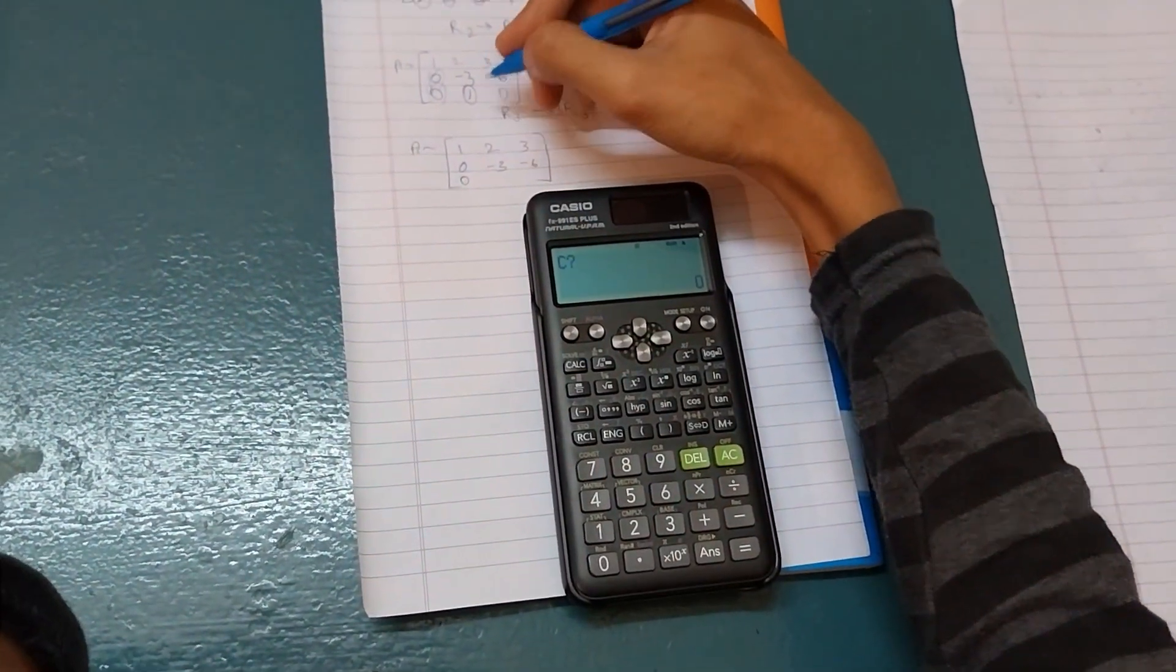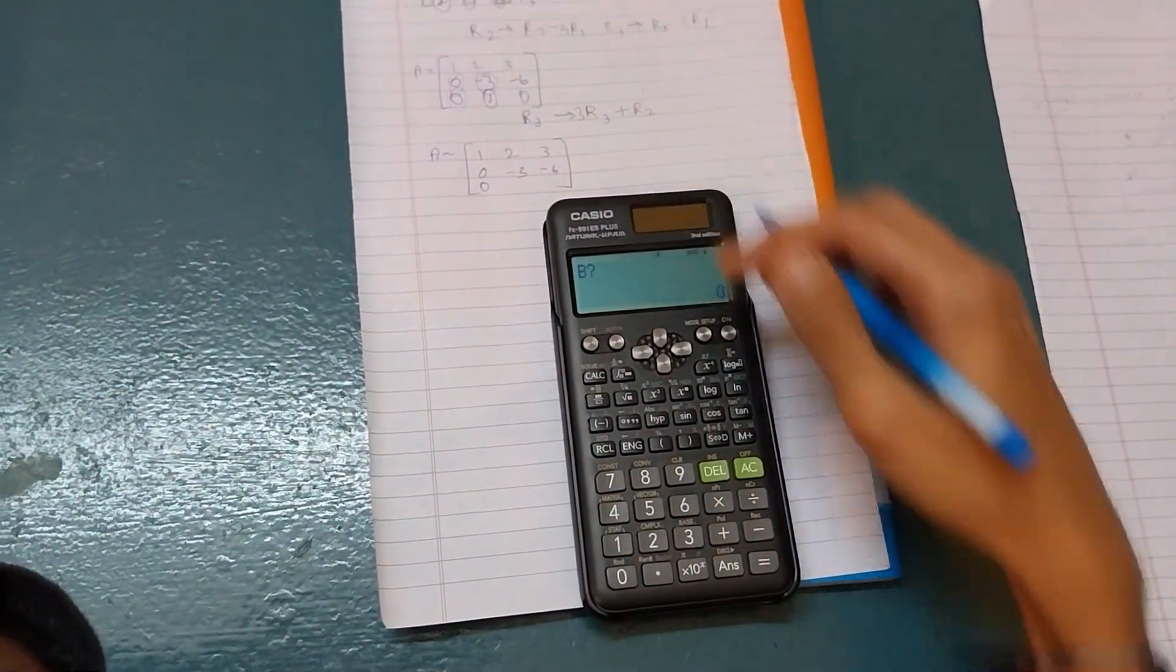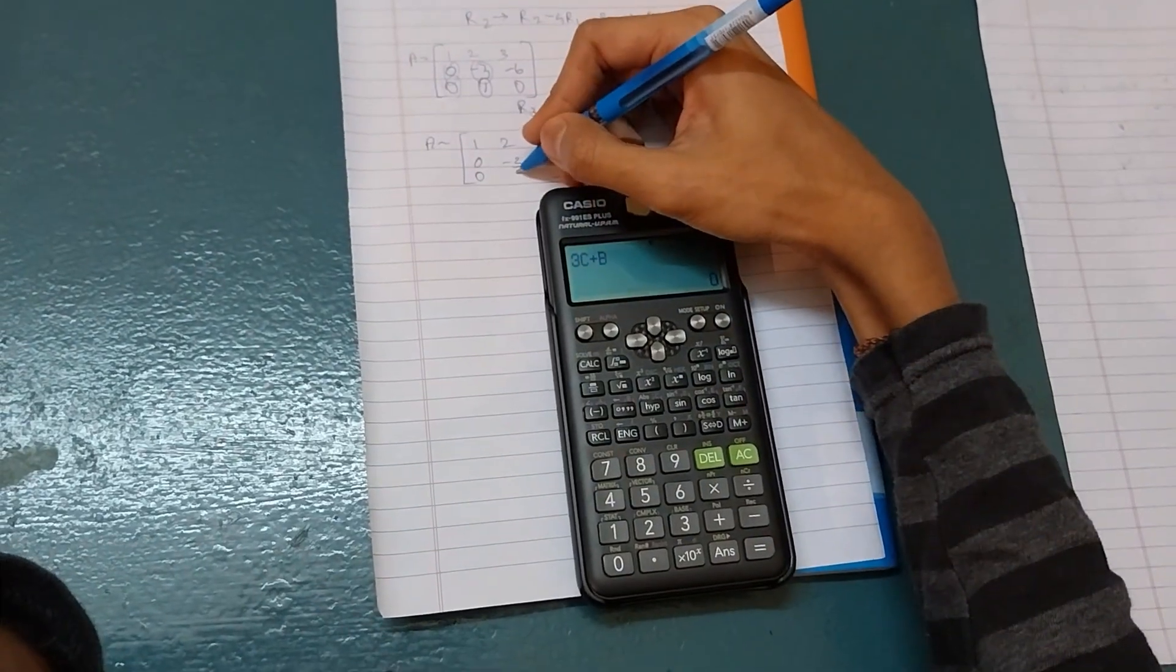C value is 1 and B value is minus 3. So this is also 0.